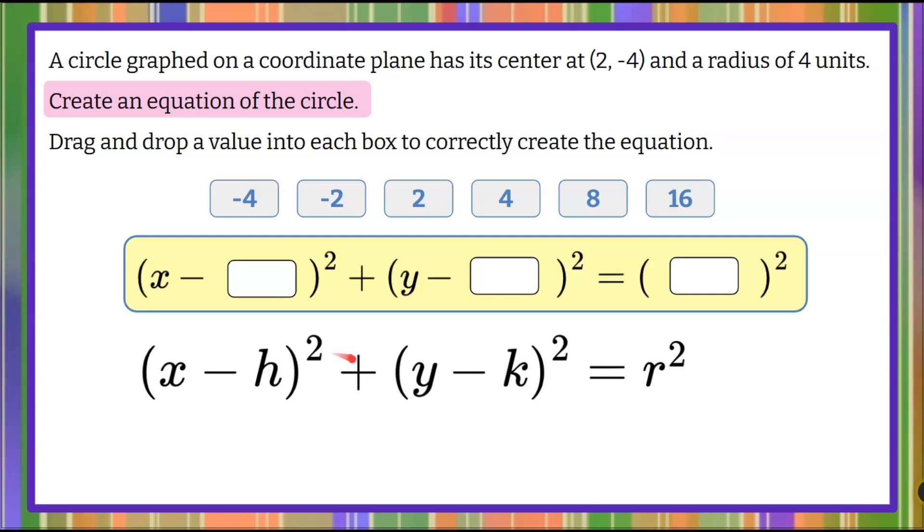x subtract h squared, add y subtract k squared, equal to r squared. So we know the center was given to us, 2, negative 4. If you remember from when we reviewed, the center is the ordered pair h,k.